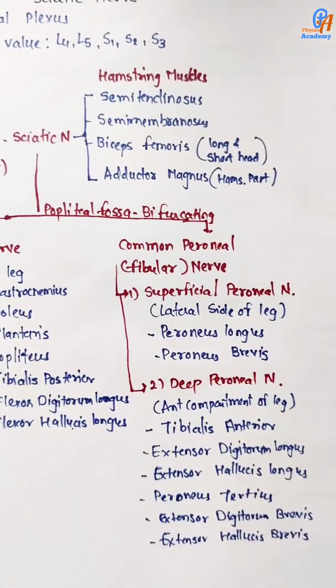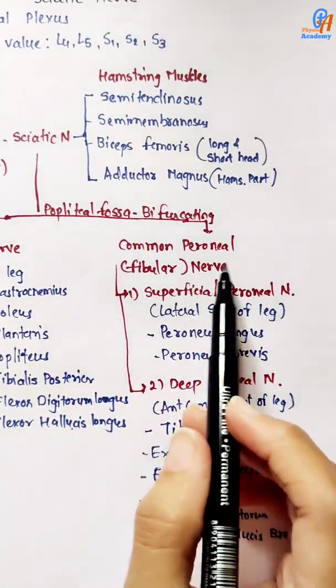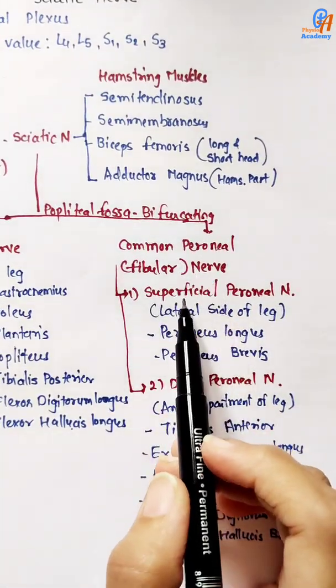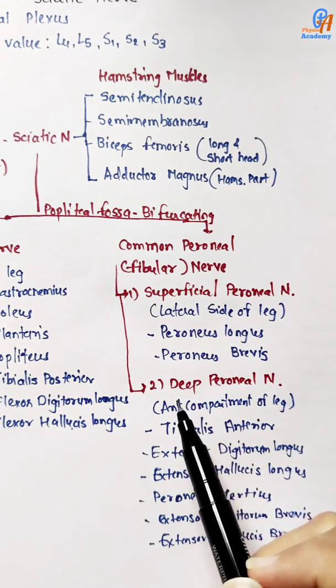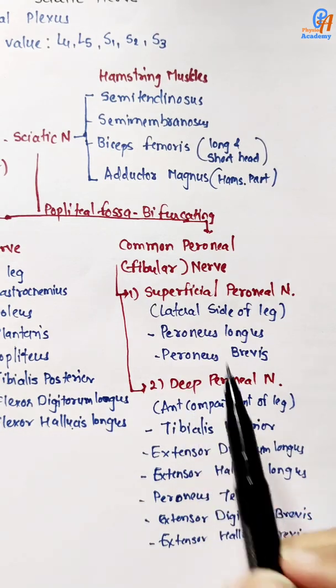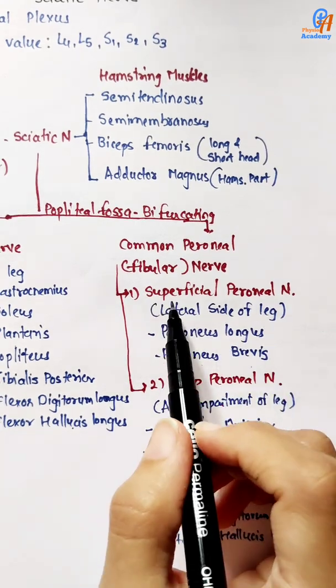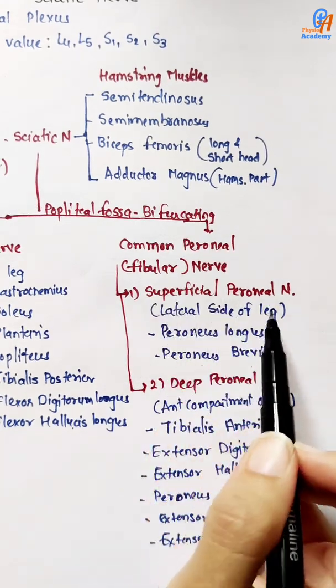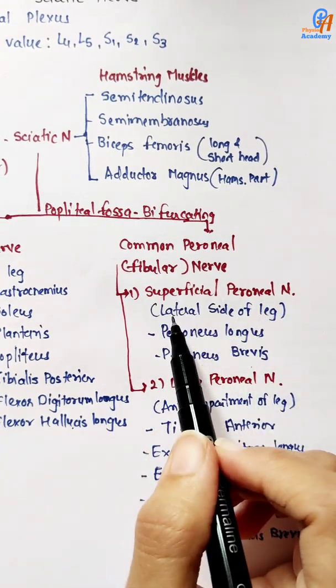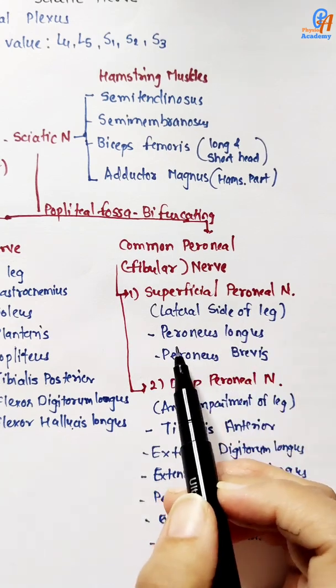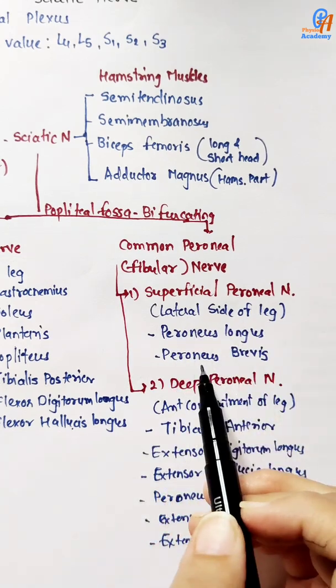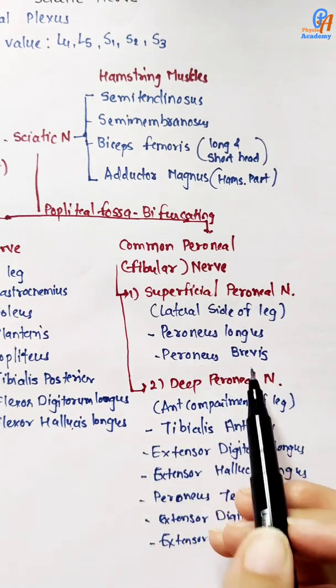The second branch, the common peroneal nerve, divides into the superficial peroneal and deep peroneal nerve. The superficial peroneal nerve supplies the lateral part of the leg — the peroneus longus and peroneus brevis muscles.